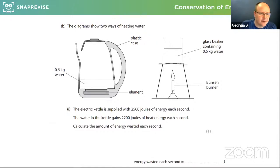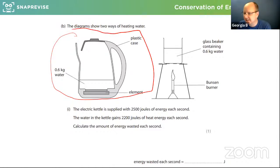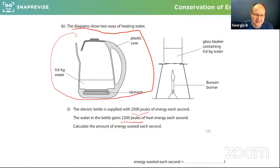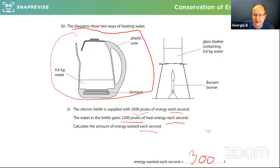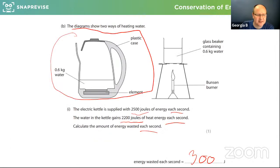Here we have a further question about the kettle. You're putting in 2,500 joules of energy; the water gains 2,200 joules of energy. Calculate the amount of energy wasted in a second. Since it says 'each second,' you can almost disregard that — what is the energy wasted if it's 2,500 in and 2,200 out? I can see 300 coming up in the chat, and that is the correct answer: 300 joules. Read the question carefully and get the maths right.